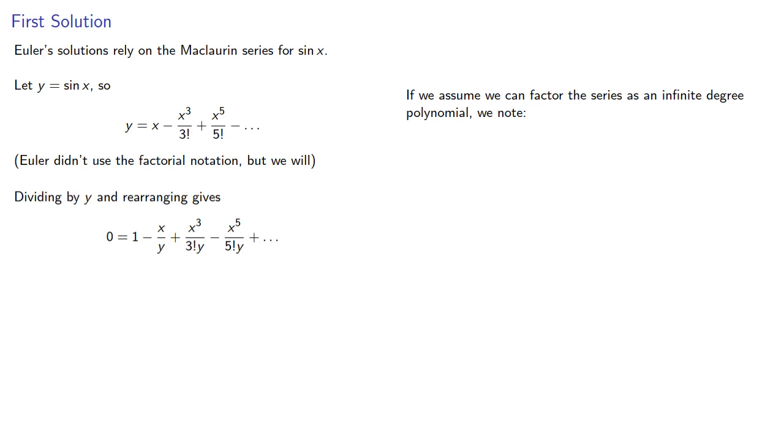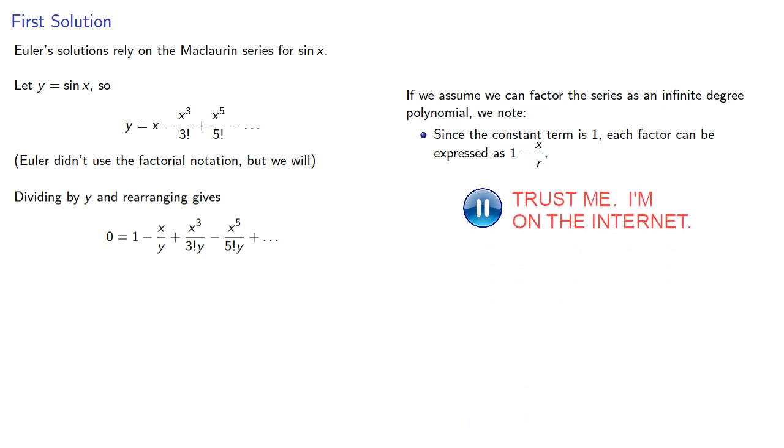Since the constant term is 1, each factor can be expressed as 1 minus x over r, where r is a root of the polynomial. So we'll write that this way.